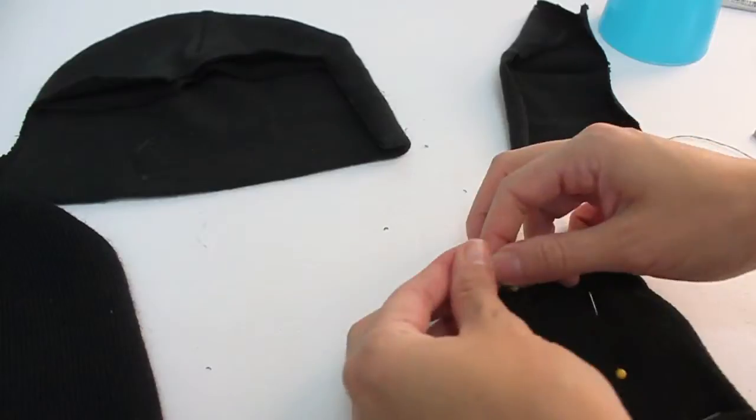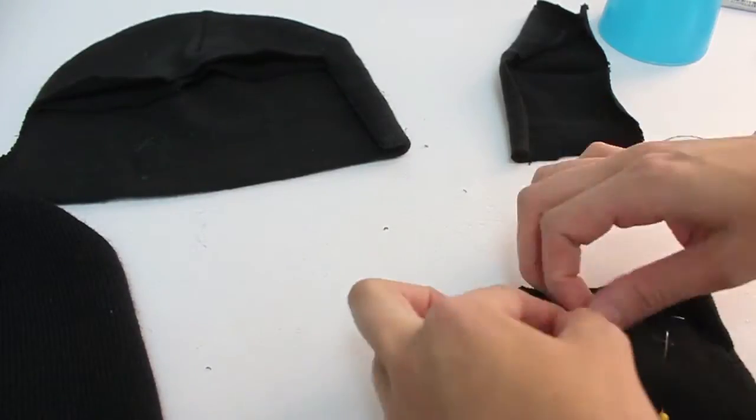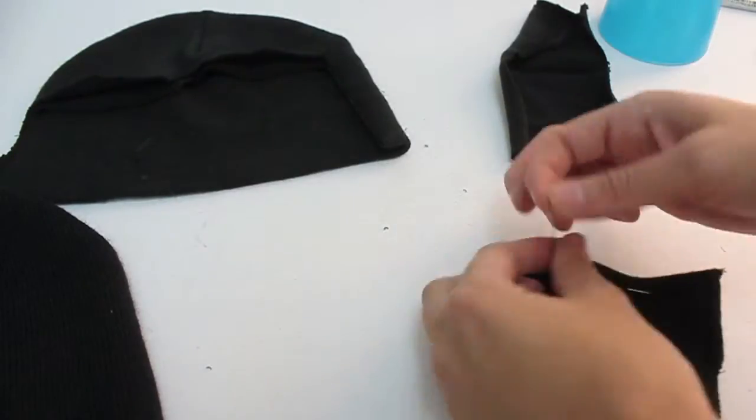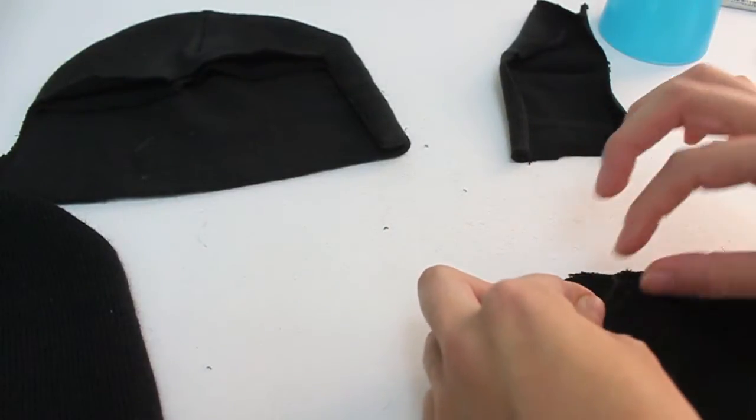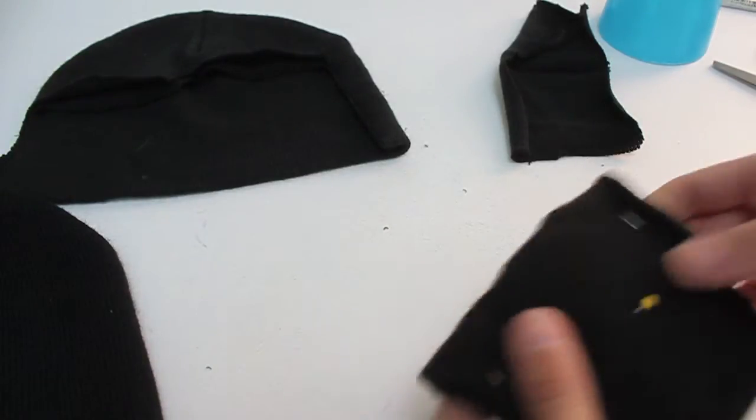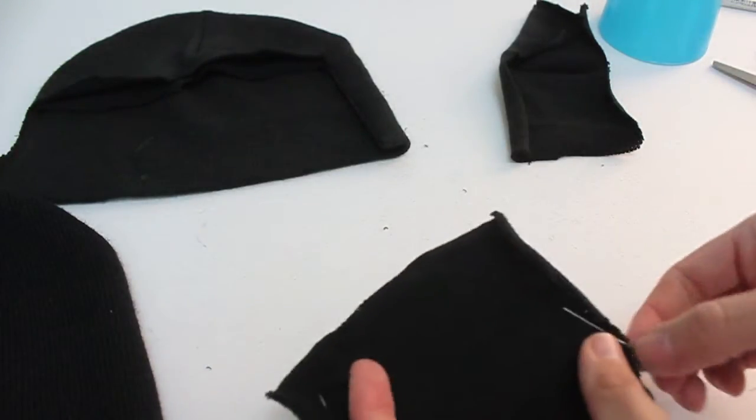Once you're done with that side, go ahead and move on to the opposite side. And don't do anything to the very bottom edge. Leave that undone. And now that both of my sides are sewn, I'm going to remove my sewing pins.